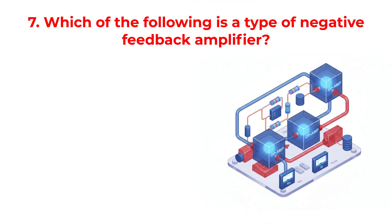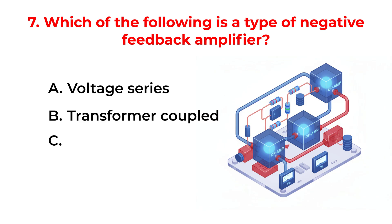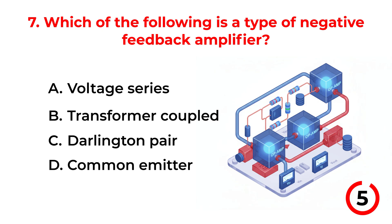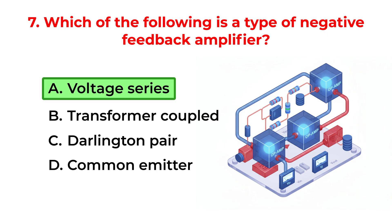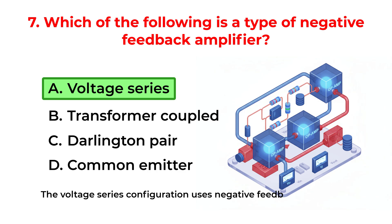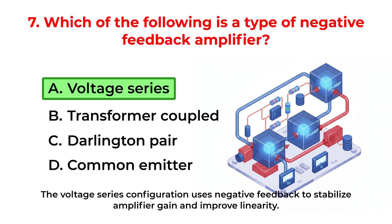Which of the following is a type of negative feedback amplifier? A. Voltage series. B. Transformer coupled. C. Darlington pair. D. Common emitter. The correct answer is Option A: Voltage series. The voltage series configuration uses negative feedback to stabilize amplifier gain and improve linearity.